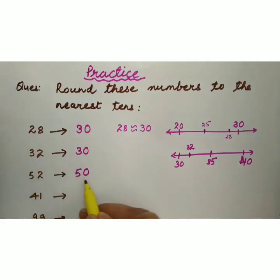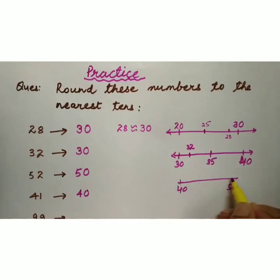Aise hum 52 ko round off kar sakte hain. 52 ko jab hum round off karenge, we will get 50. 41 ko jab hum round off karenge, we will get 40. Kyunki 41 lie karta hai 40 aur 50 ke beech me. Toh 41 will be closer to 40. So its approximate value will be 40. 99 lie karta hai 90 aur 100 ke beech me. 99 is closer to 100. So jab hum 99 ko round off karenge, toh humare paas hoga 100.